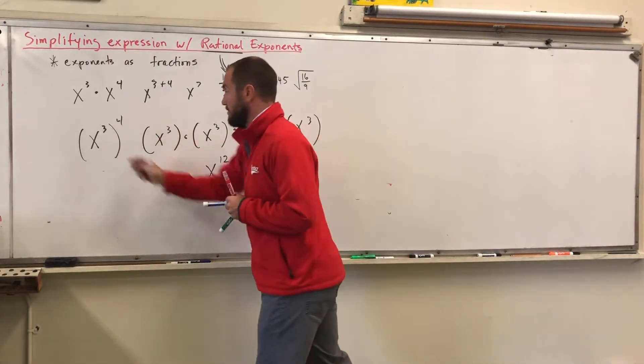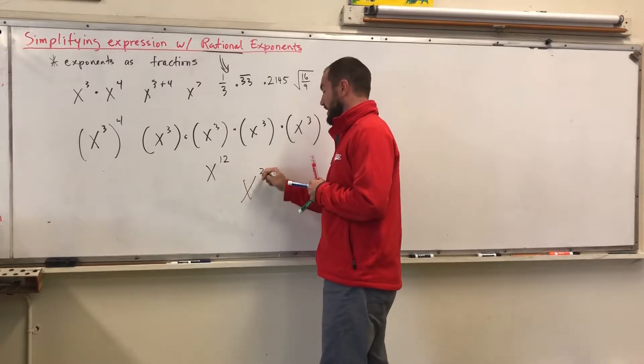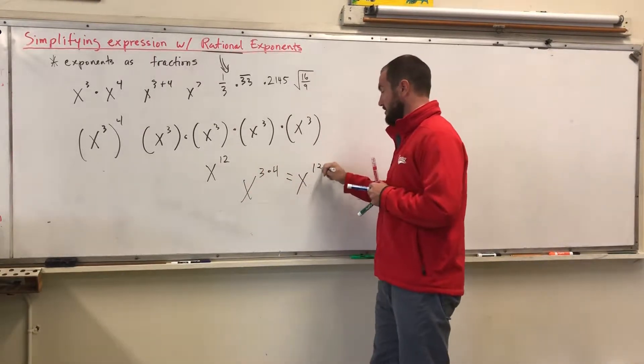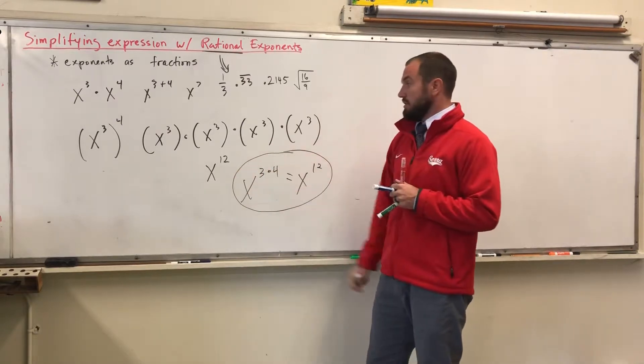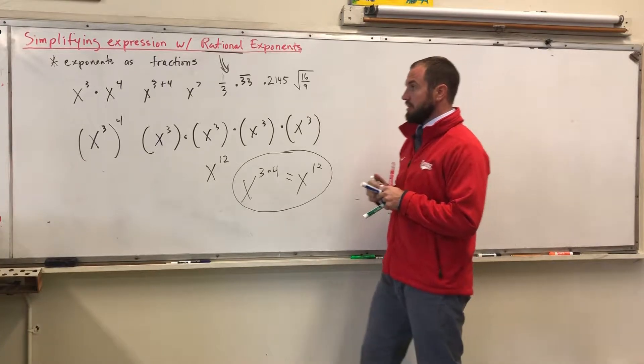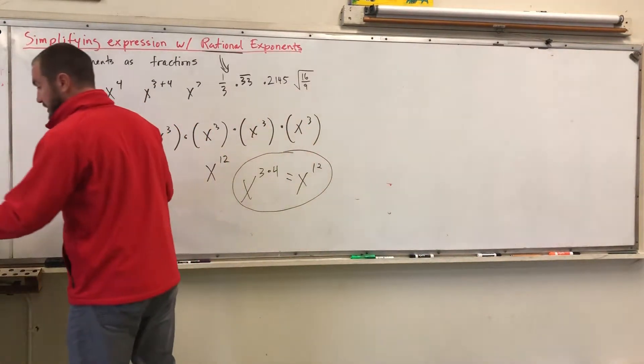So the idea here is that you're multiplying 3 times 4. I think it's easier to look at it this way than it is to break this up into four powers. This is a good rule to understand.